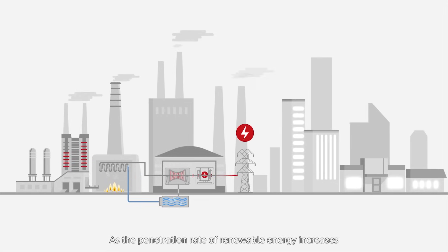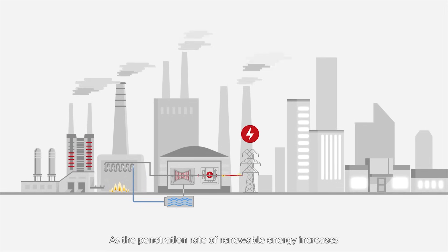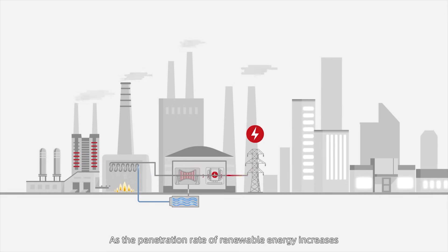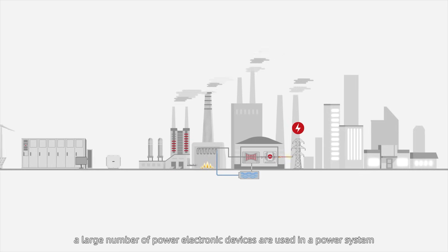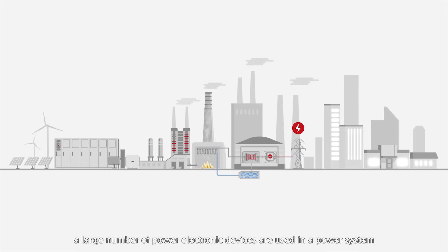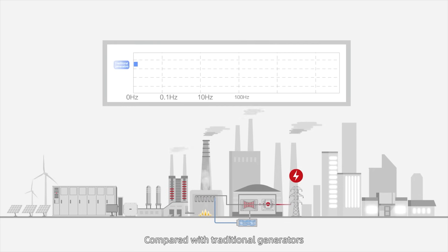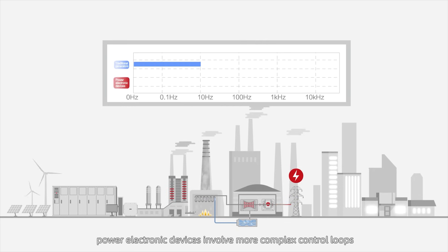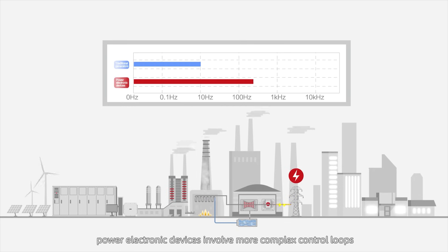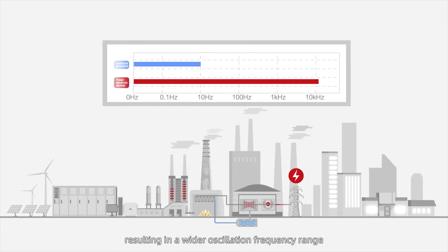As the penetration rate of renewable energy increases, a large number of power electronic devices are used in a power system. Compared with traditional generators, power electronic devices involve more complex control loops, resulting in a wider oscillation frequency range.